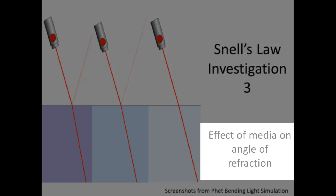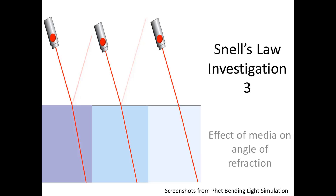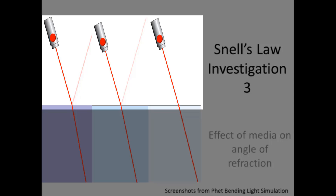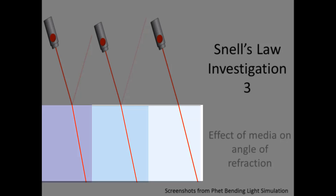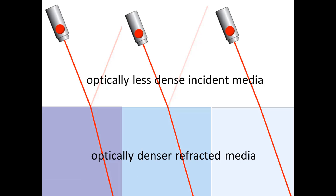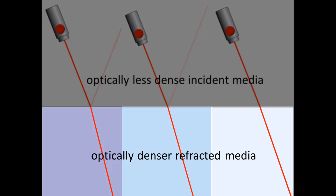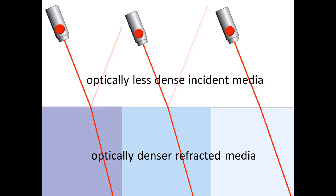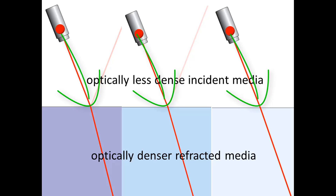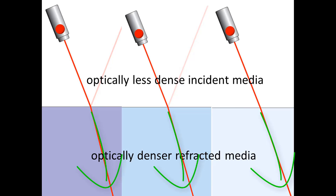Let's investigate the effect of media on the angle of refraction for situations where light is traveling from an optically less dense medium to an optically denser medium. We're going to keep the incident medium constant at air, change the optical density of the refracted medium, and see how that affects the degree of refraction. In all cases, the light is going to be bent towards the normal.